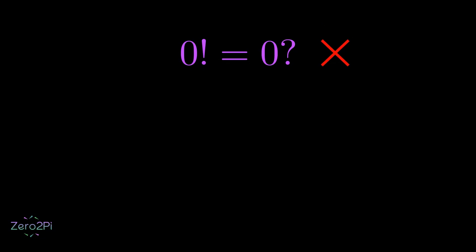But that's actually not true. The value of 0 factorial is not 0. In fact, it's just equal to 1. I know, it doesn't make sense, which is exactly why we'll be proving it both logically and mathematically in this video.